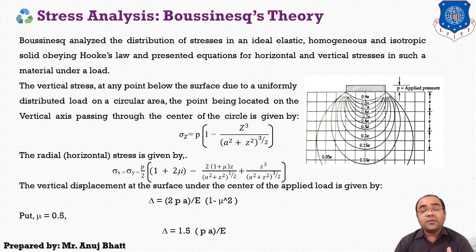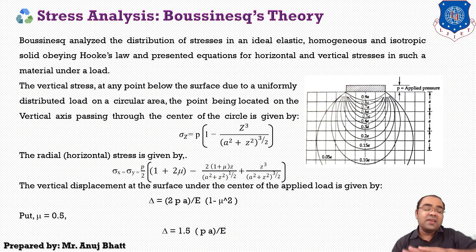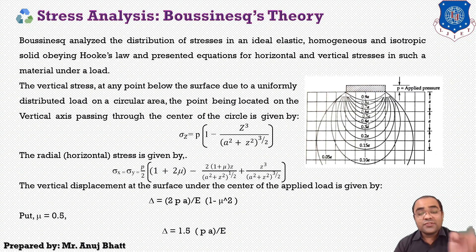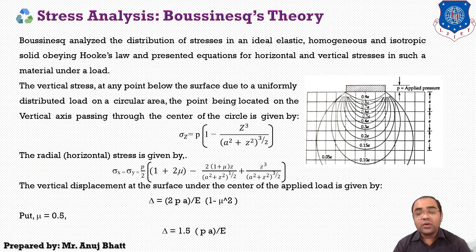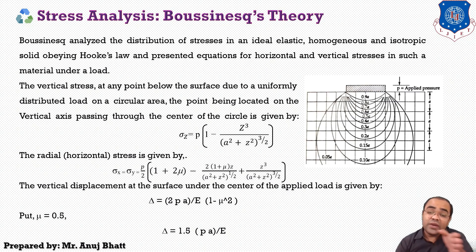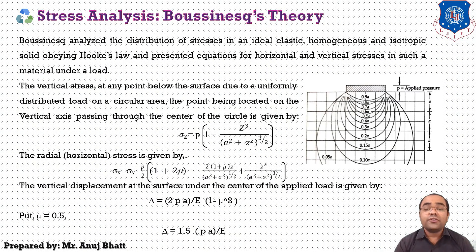Sigma z is the vertical stress on a point on the z-axis. Sigma x and sigma y are equal to the radial or horizontal stresses. Here, small p is the applied pressure per unit area, small a is the radius of the circular loaded plate, and z is the depth. Mu is the Poisson's ratio — the ratio of strain normal to the applied stress to the strain parallel to the applied stress. For soils, it is generally around 0.5.